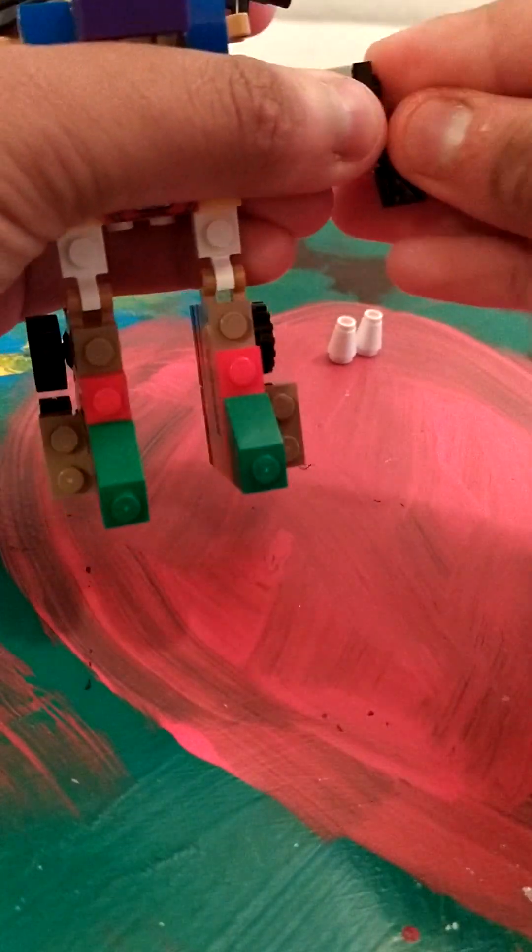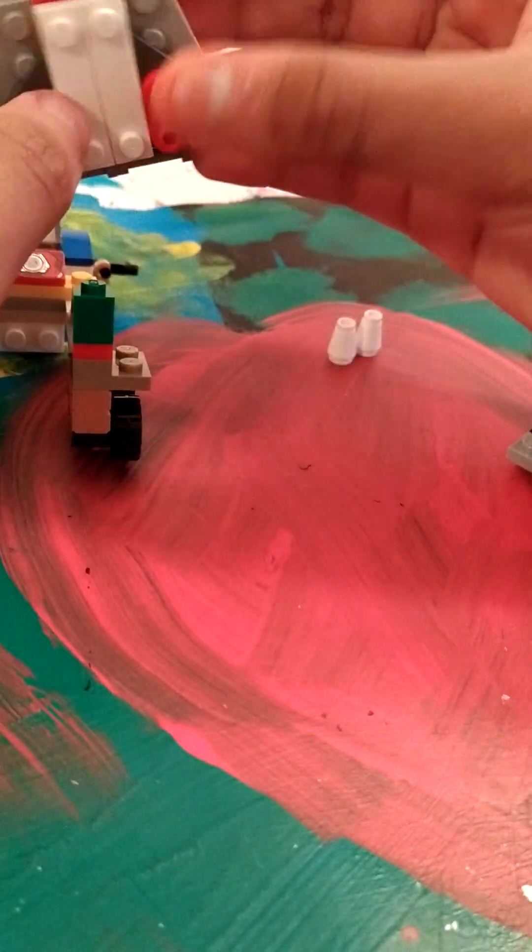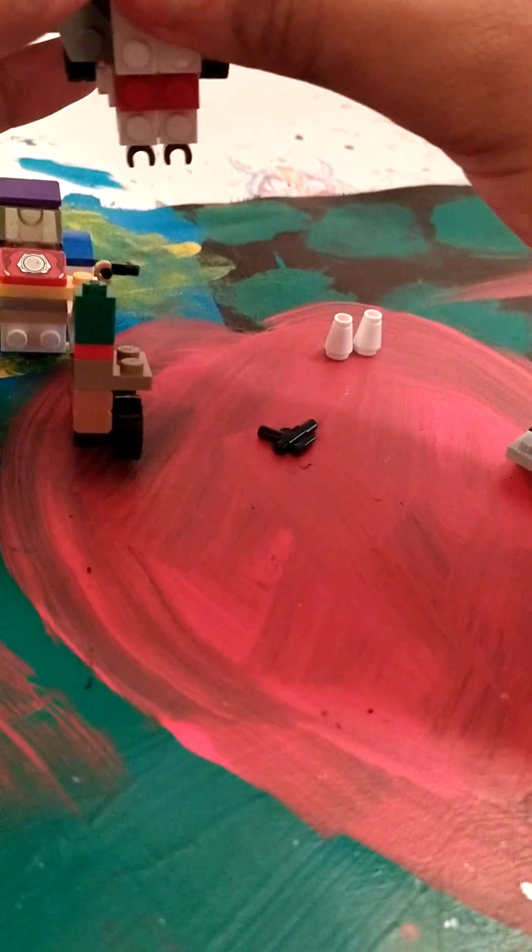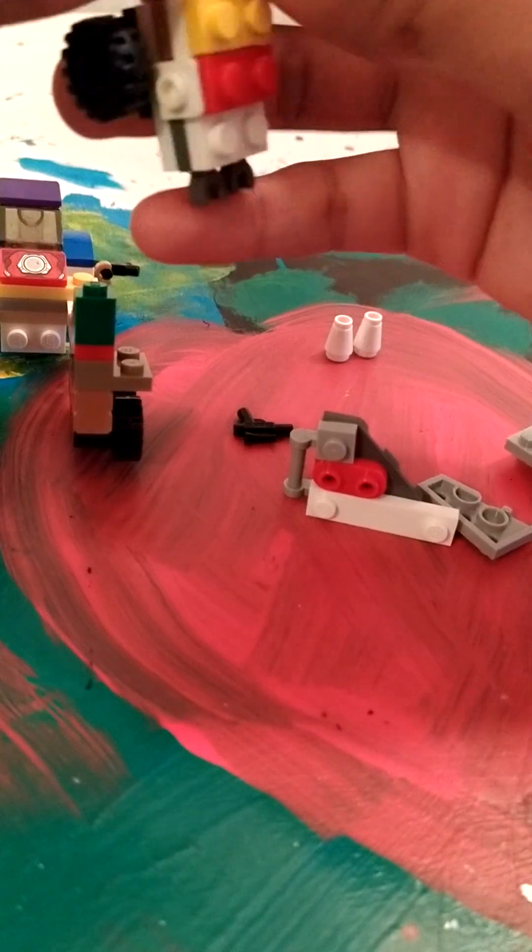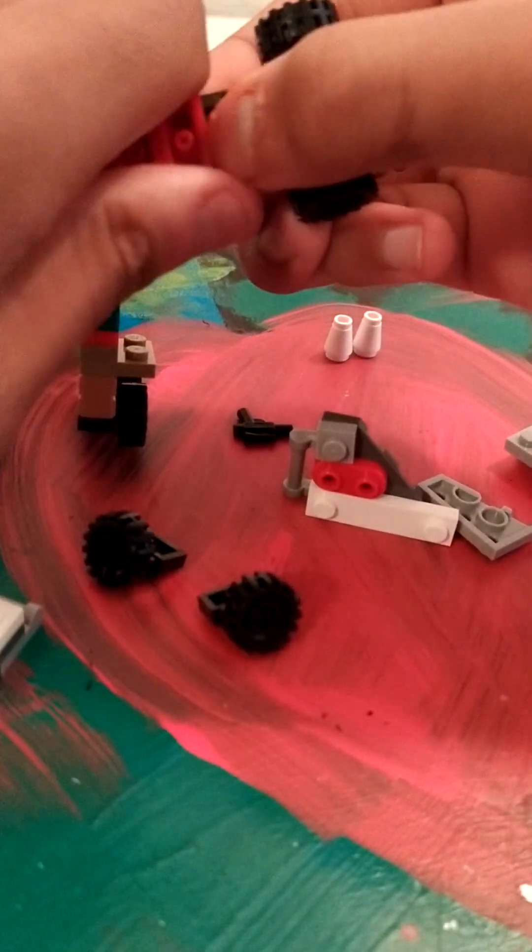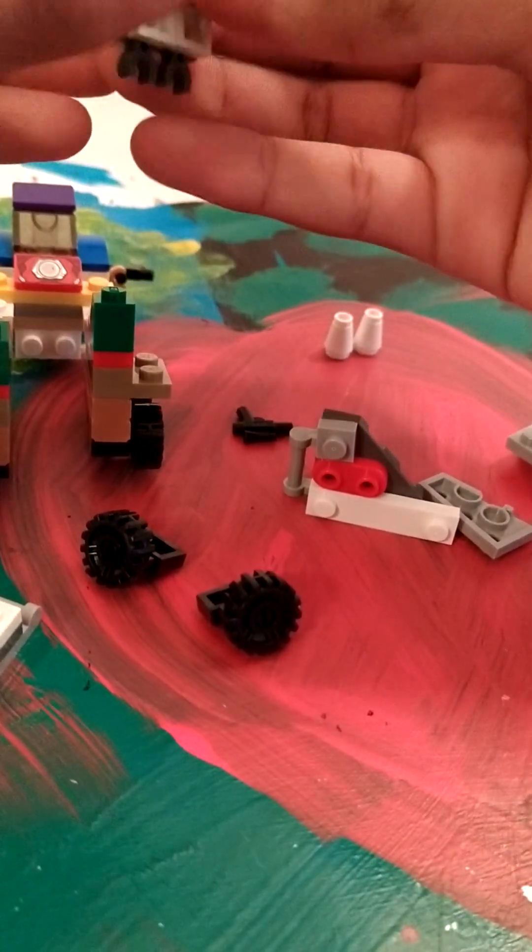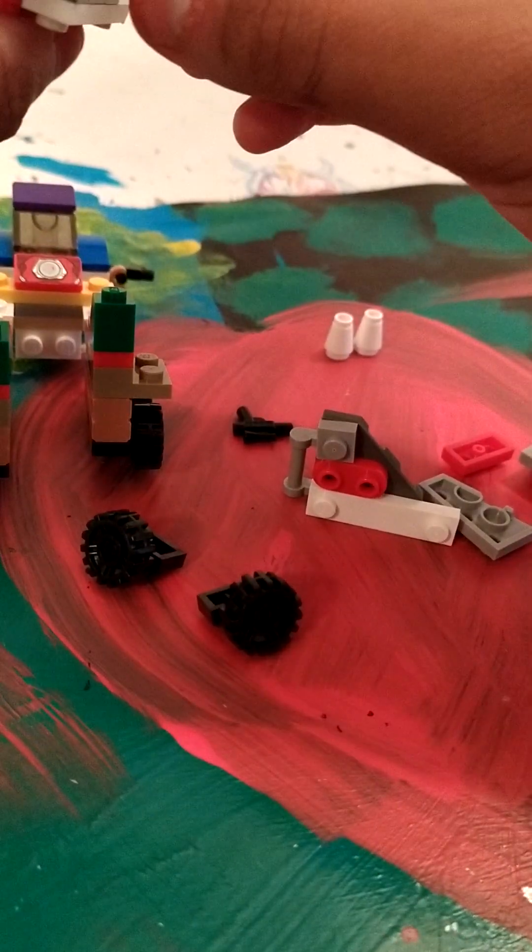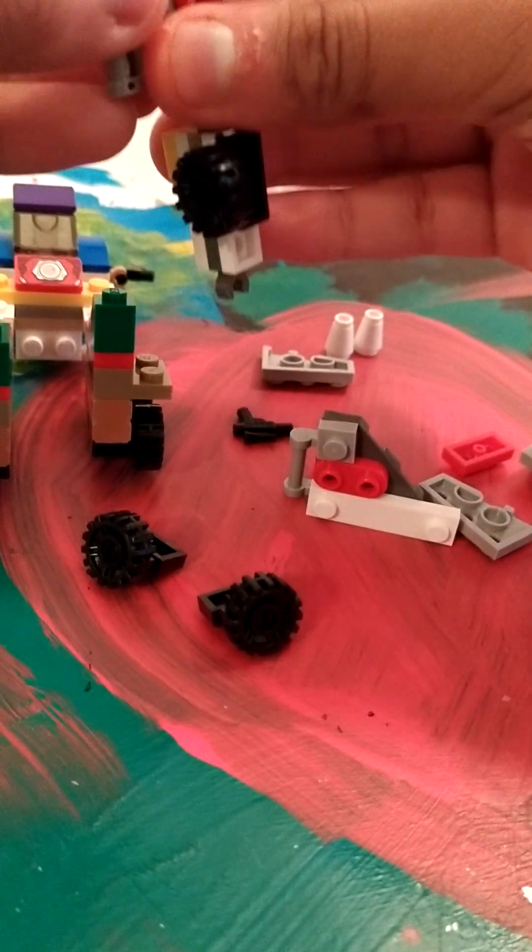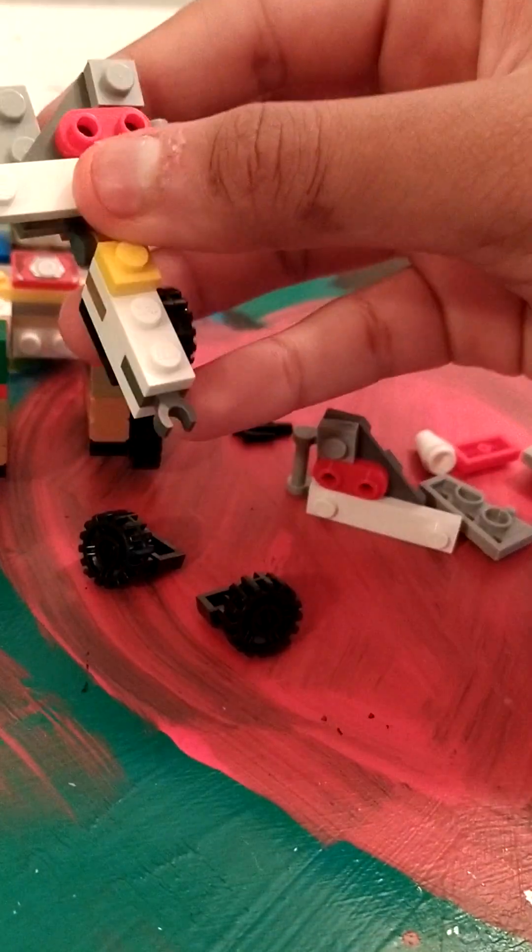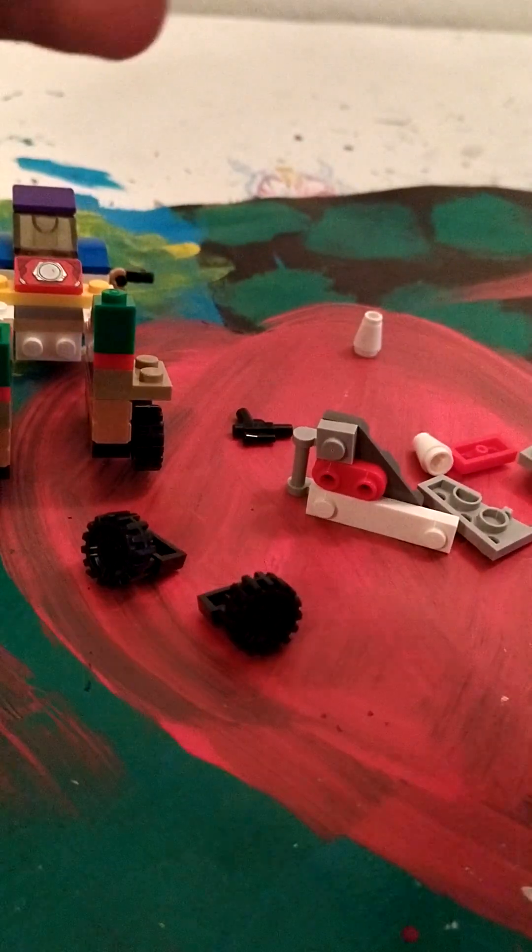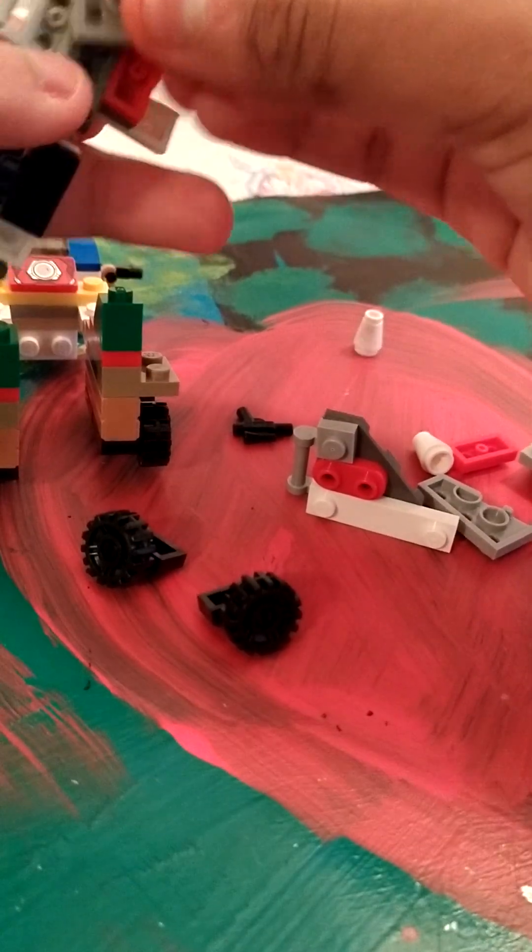And place it right. Oh right, it's a gun right there. Remove the cannon and attach it right there. Now for the arms, it's kind of tricky. Finally, thank goodness. Remove hands and attach it right there.